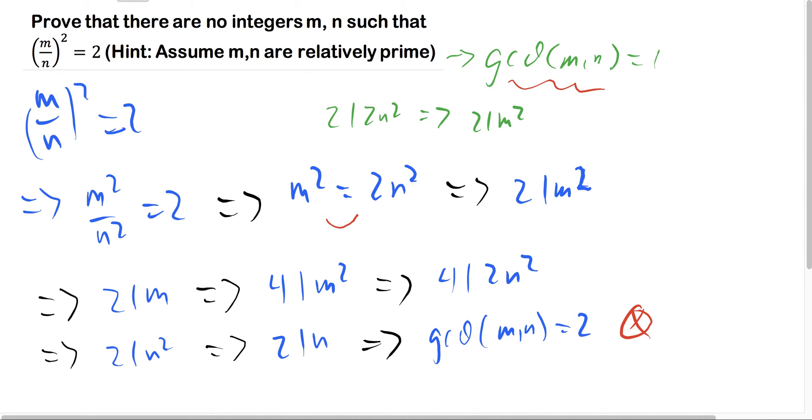So our assumption that m over n squared equals 2 does not hold, so therefore there aren't any integer values that could make that statement work, and the proof is done.